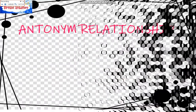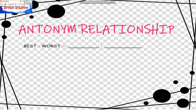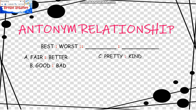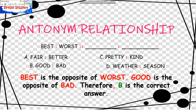Next, we have the Antonym Relationship. Best is to Worst as blank is to blank. The choices are: A, Fair is to Better; B, Good is to Bad; C, Pretty is to Kind; D, Weather is to Season. Best is the opposite of Worst, and Good is the opposite of Bad. Therefore, B is the correct answer: Best is to Worst as Good is to Bad.